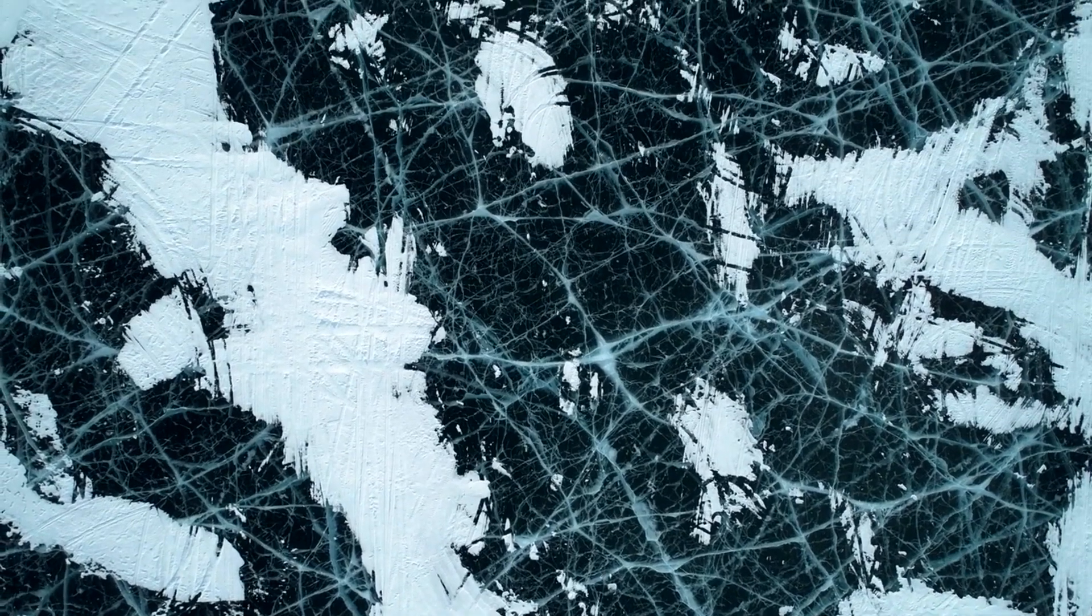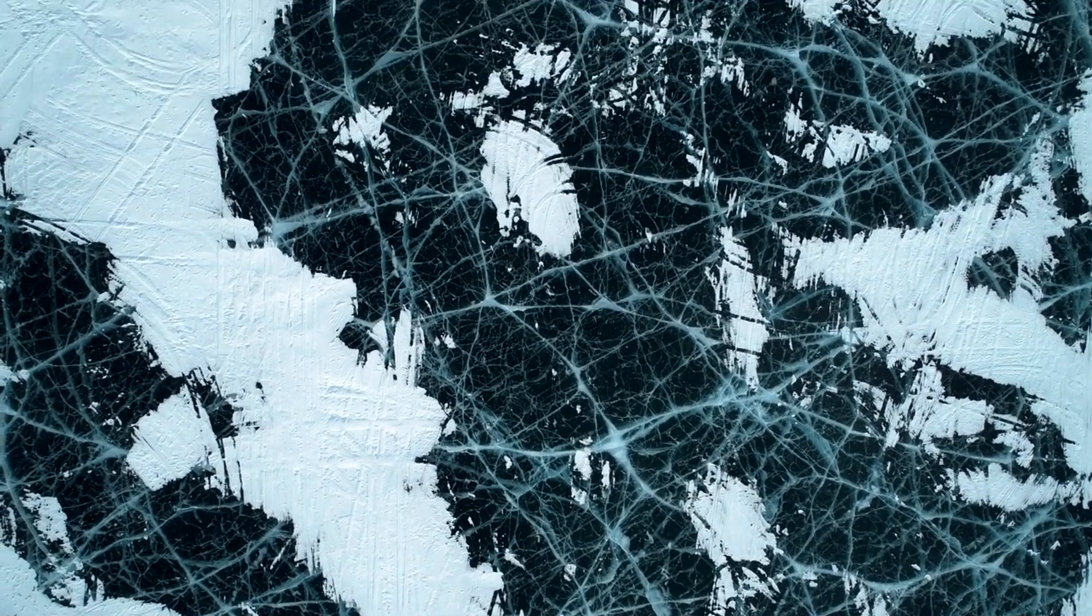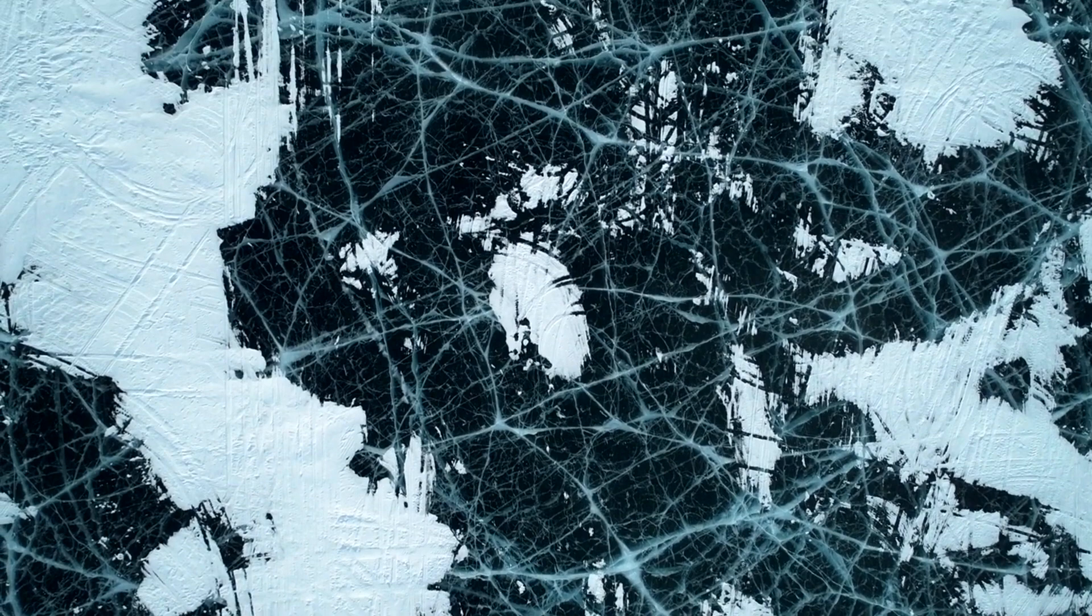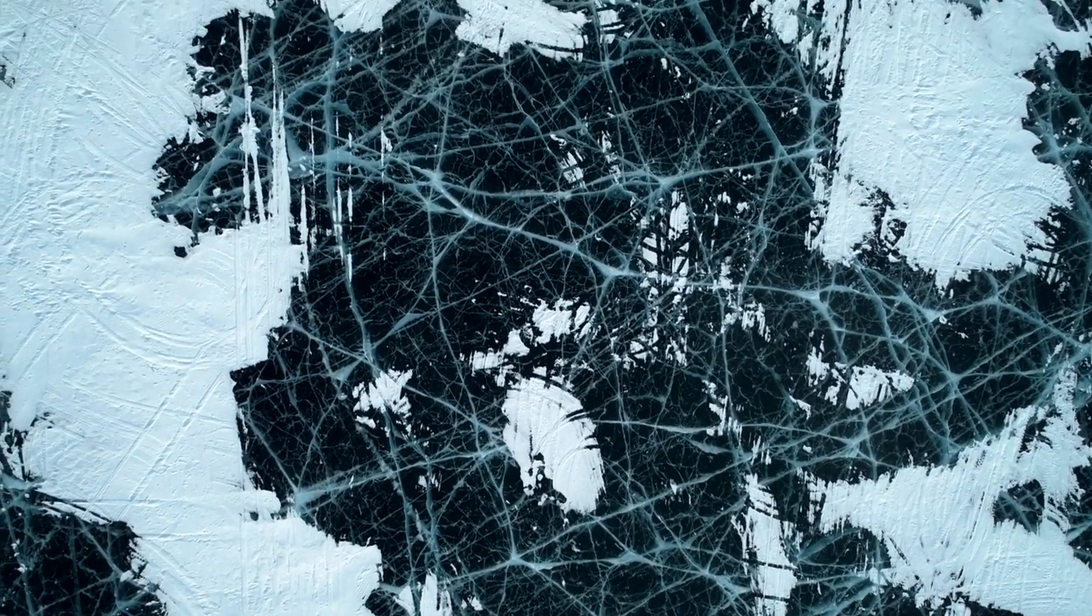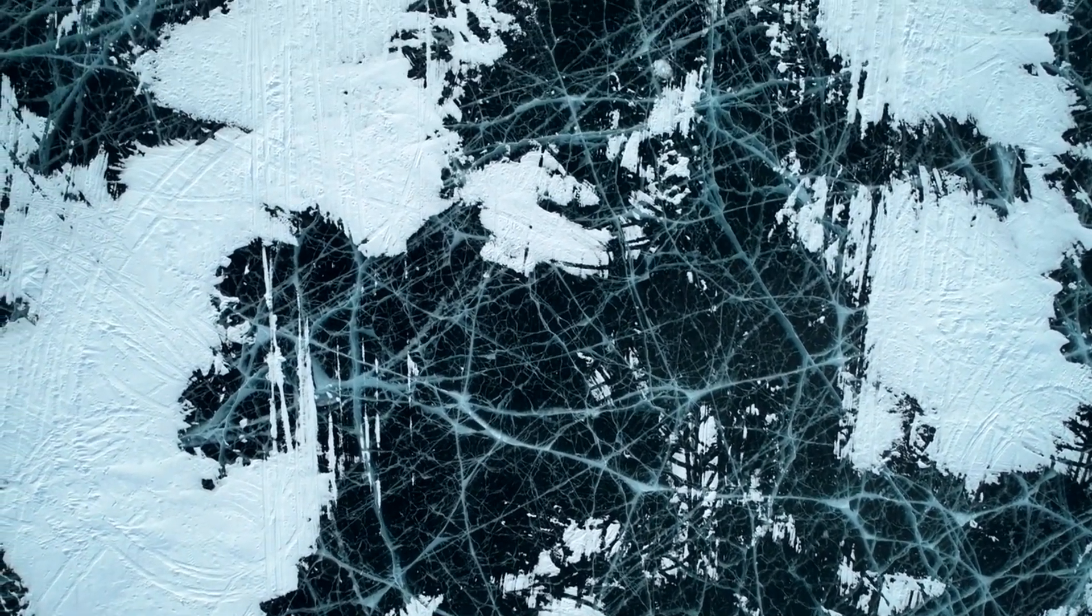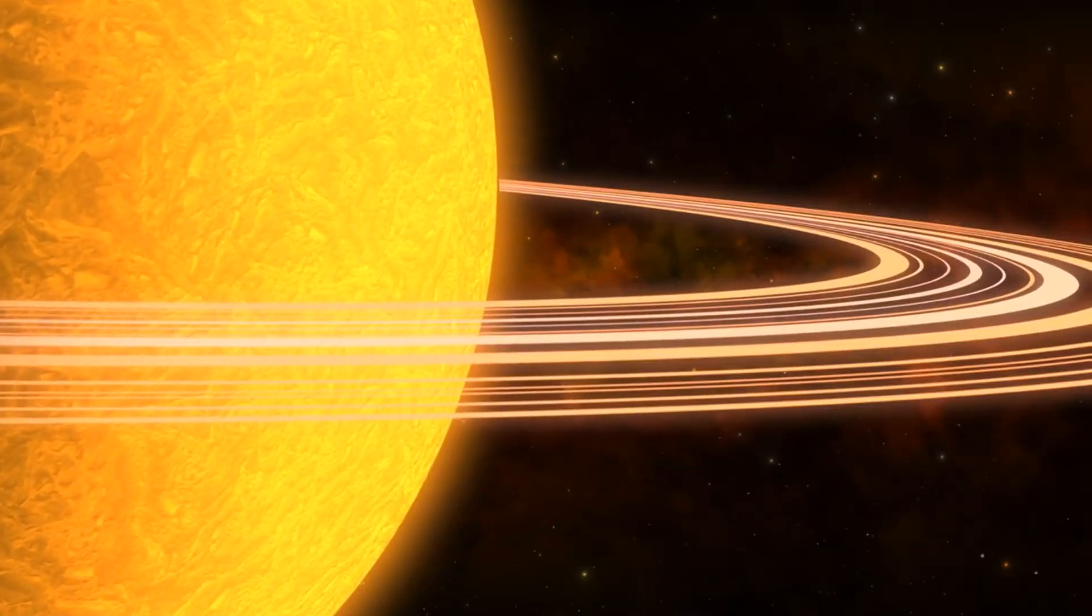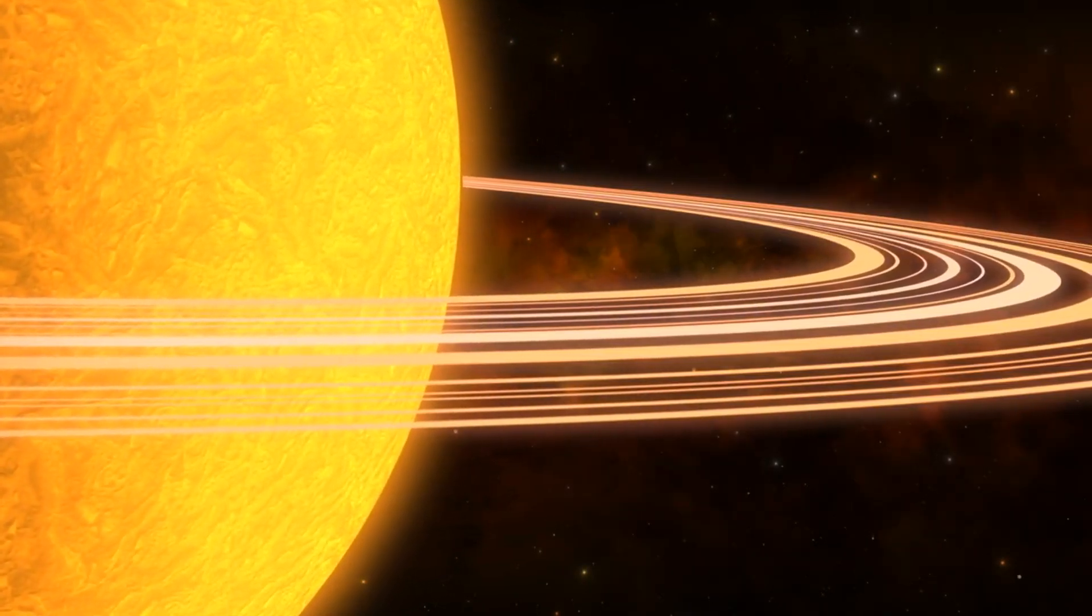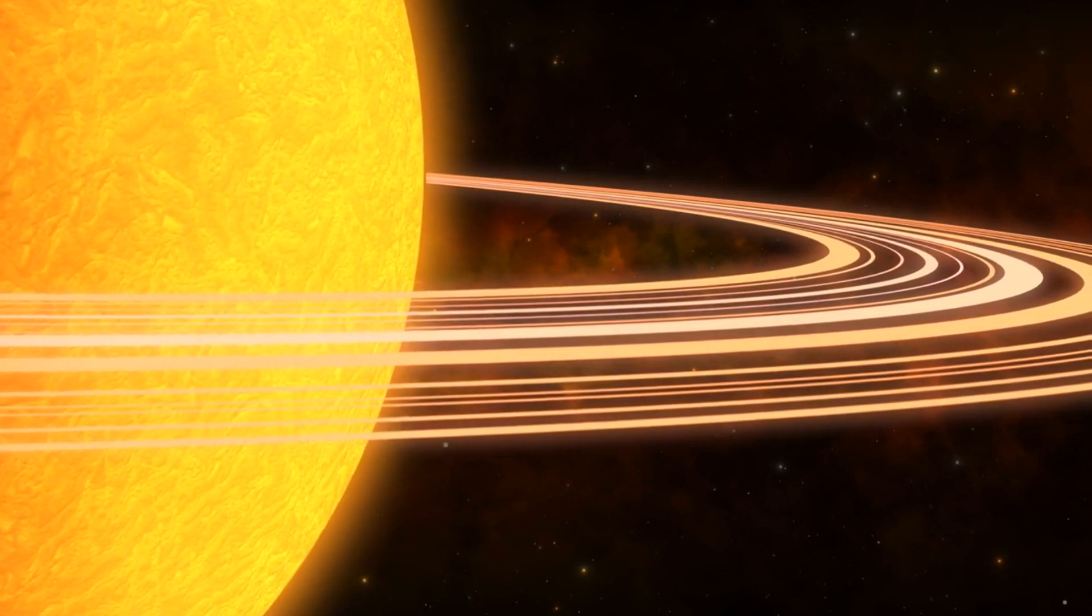Picture this: countless icy fragments, some larger than houses, others infinitesimally small, composed mostly of pristine water ice and one band slightly darker than the rest. Over time, these shattered remnants organized themselves into the breathtaking ring system we behold today.